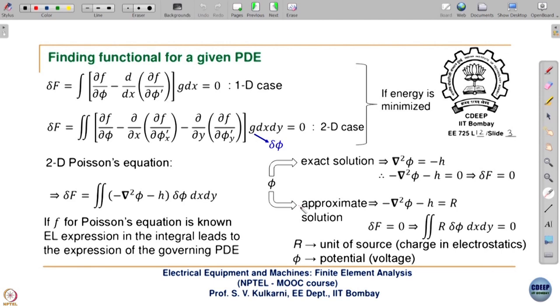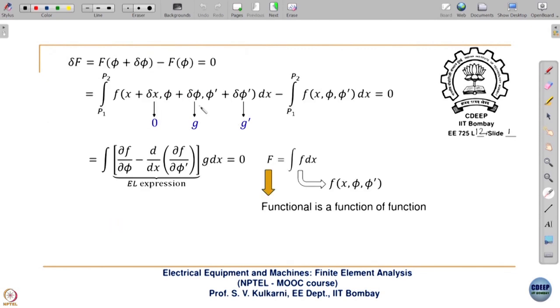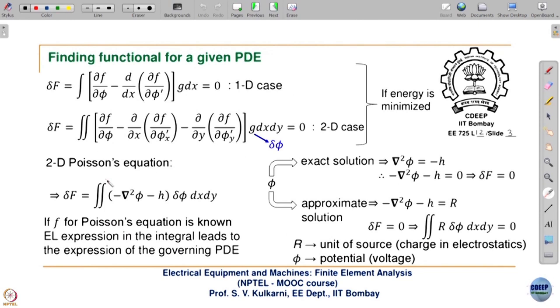Going further, this energy minimization equation we have already seen for the 1D case. Correspondingly for the 2D case, with two independent variables x and y, the equation gets modified accordingly, where g is nothing but δφ, the variation in φ. The question that arises is: for the one-dimensional electrostatic problem we knew the energy density expression as (1/2)εE², but if we want to find the energy functional for a given PDE, how do we do that?